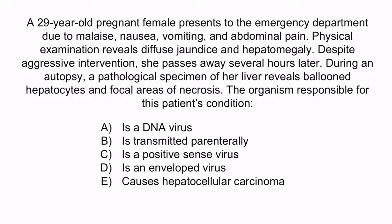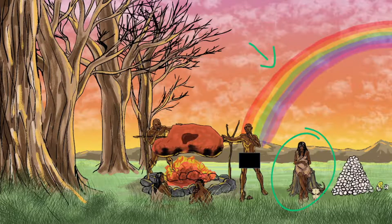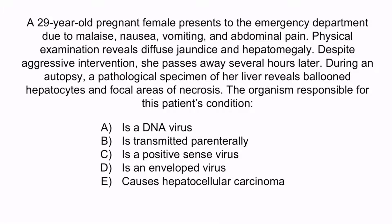From the question stem, hopefully you noticed that this patient was a pregnant female who abruptly passed away in the setting of jaundice and hepatomegaly. This is a classic vignette describing Hepatitis E virus, so the correct answer is C — the organism is a positive sense virus. From the image, recall that the pregnant woman sitting next to the skull helps you remember that Hepatitis E virus causes fulminant hepatitis in pregnant women, and the rainbow should help you remember it's a positive sense virus. A is wrong because Hepatitis E virus is an RNA virus, not a DNA virus. B is wrong because Hepatitis E virus is associated with fecal-oral transmission.